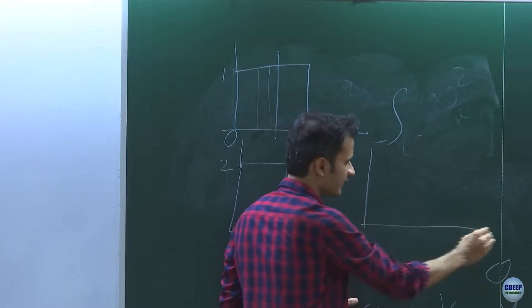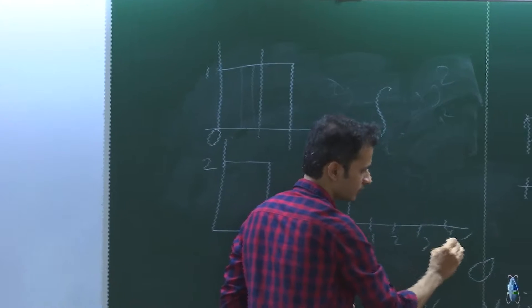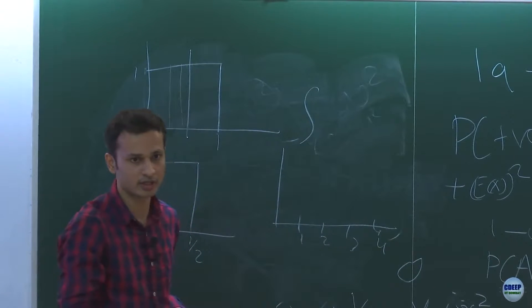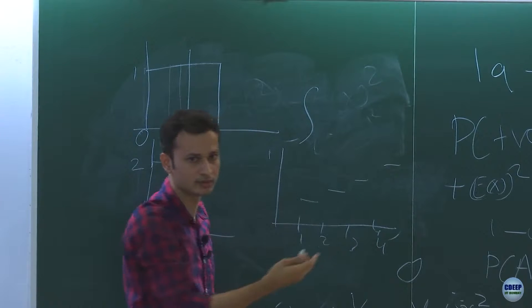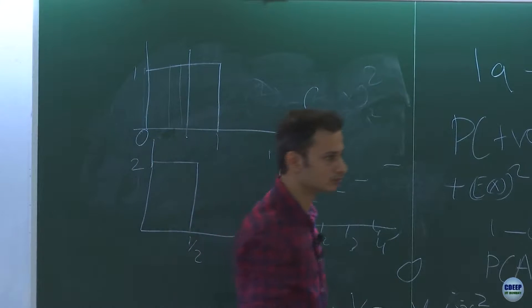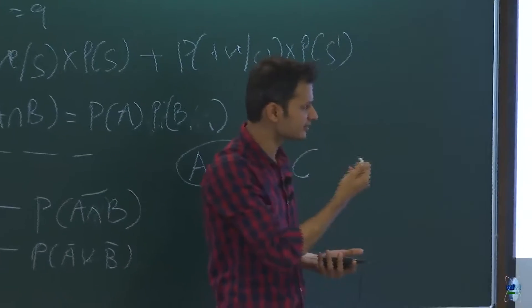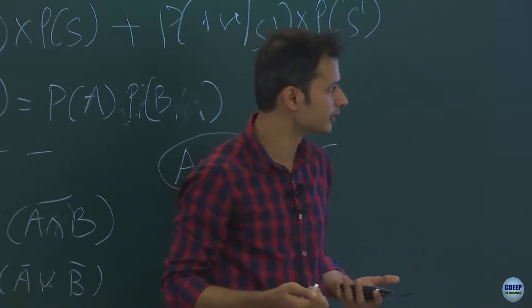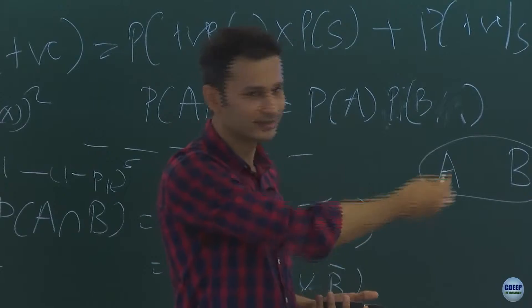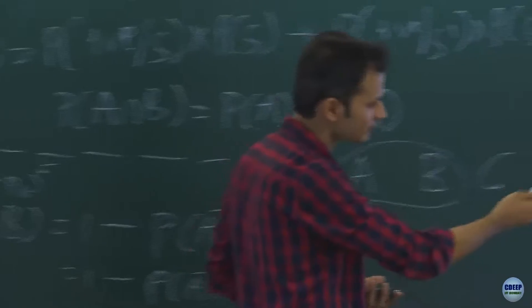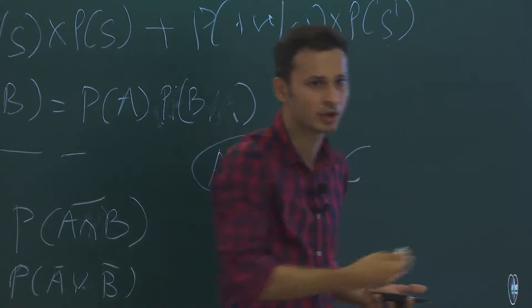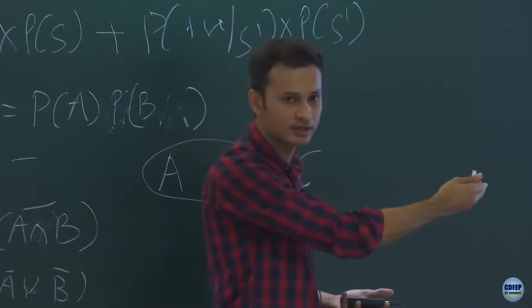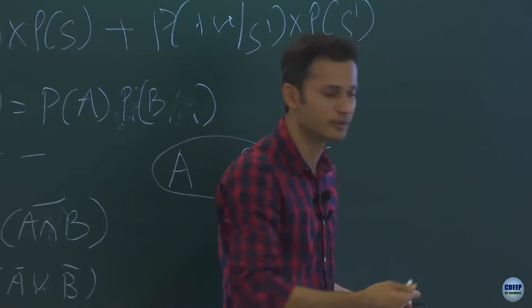For example, in a discrete case rolling a die, the cumulative probability distribution steps up and finally reaches 1. The CDF is useful because sometimes it is difficult to directly obtain a PDF, but if we can obtain the cumulative distribution function we can differentiate it to get the probability density function.